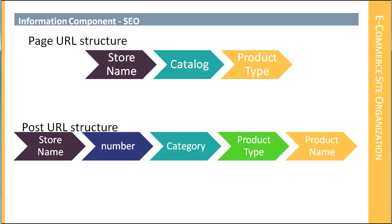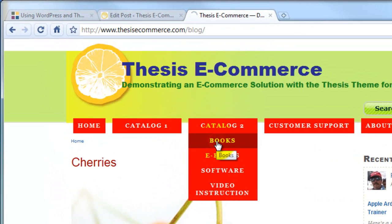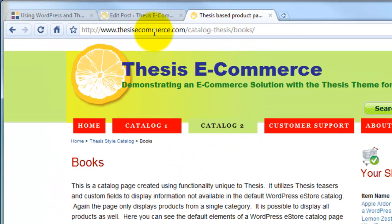A semantic URL is a URL that a person can read. Because we have two different structures — the structure of pages and the structure of posts on the site — the page structure is going to start off with the store name, then it will have the catalog, and it will have the product type. For example, if we look at books, you can see thesis ecommerce.com is the store name, and the catalog name is in this case 'catalog thesis'.